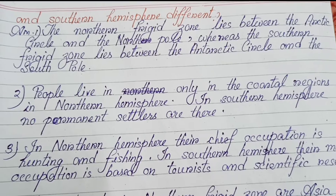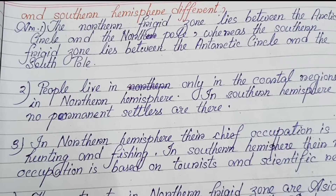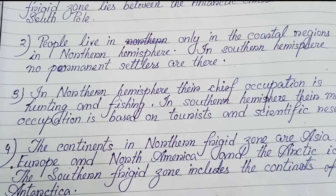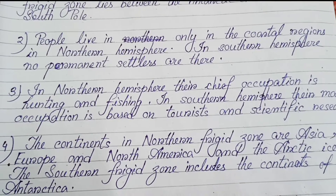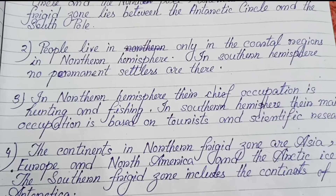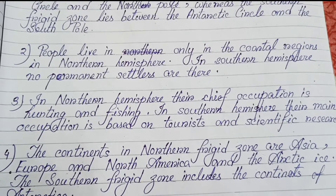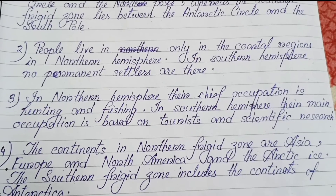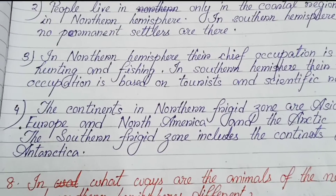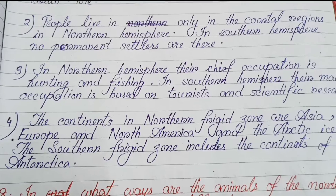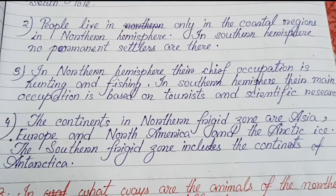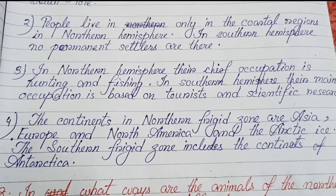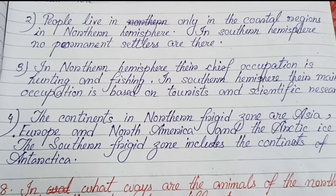Further differences: In the northern hemisphere, people live only in the coastal regions; in the southern hemisphere there are no permanent settlers. In the northern hemisphere, the chief occupation is hunting and fishing; in the southern hemisphere, the main occupation is based on tourism and scientific research. The continents in the northern frigid zone are Asia, Europe, and North America with the Arctic ice; the southern frigid zone includes the continent of Antarctica.